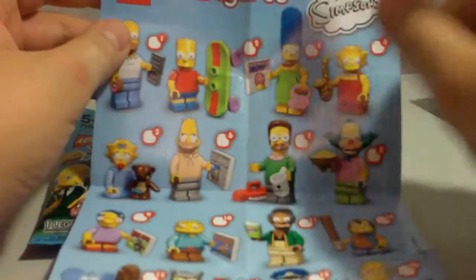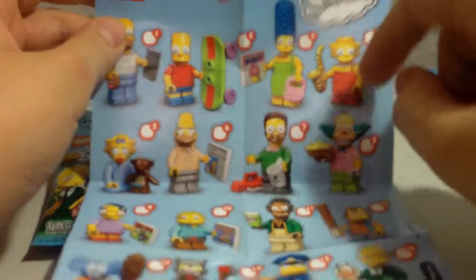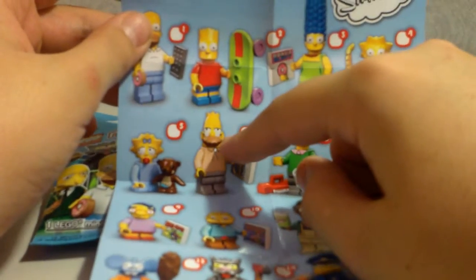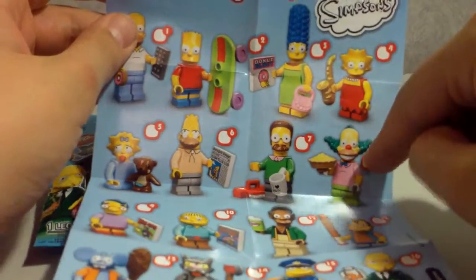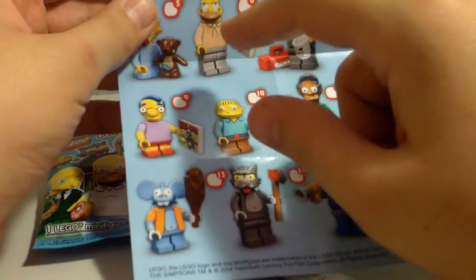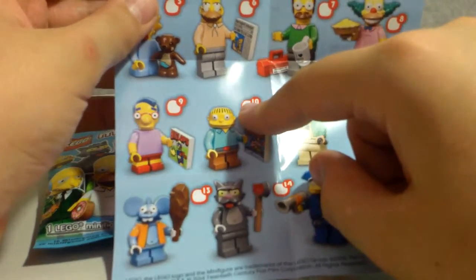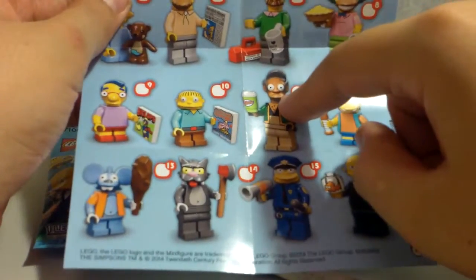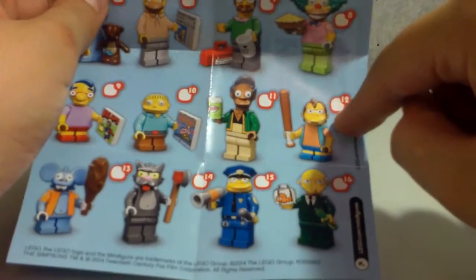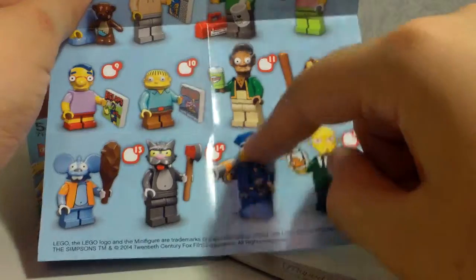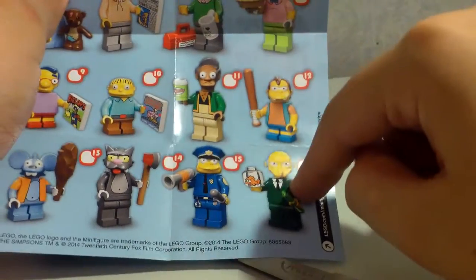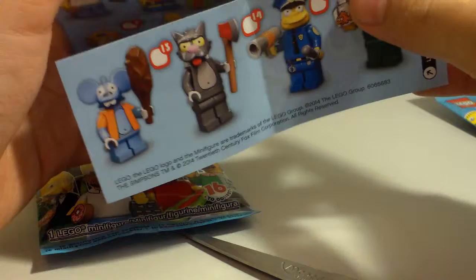So we've got Homer, Bart, Marge, Lisa, Maggie, Abe Simpson, Ned Flanders, Krusty the Clown, Milhouse Van Houten I think, Ralph Wiggum, Apu, Nelson Muntz, Itchy, Scratchy, Chief Wiggum, Chief Clancy Wiggum, and Mr. Burns, Montgomery Burns or something like that I think his name is.